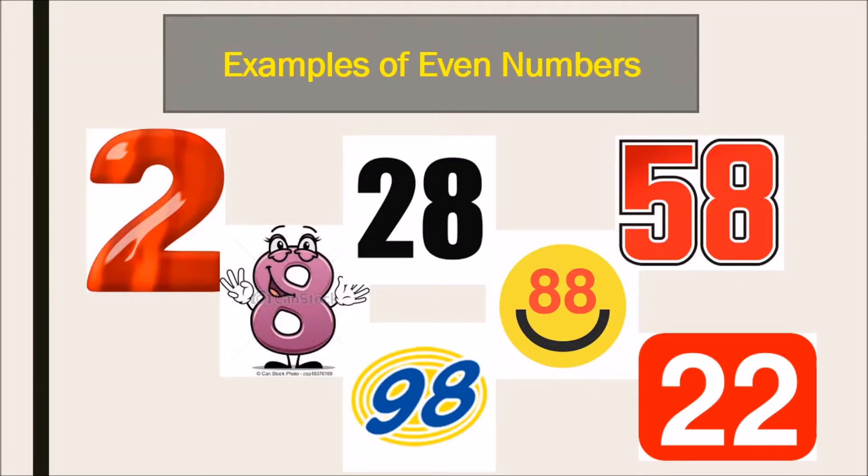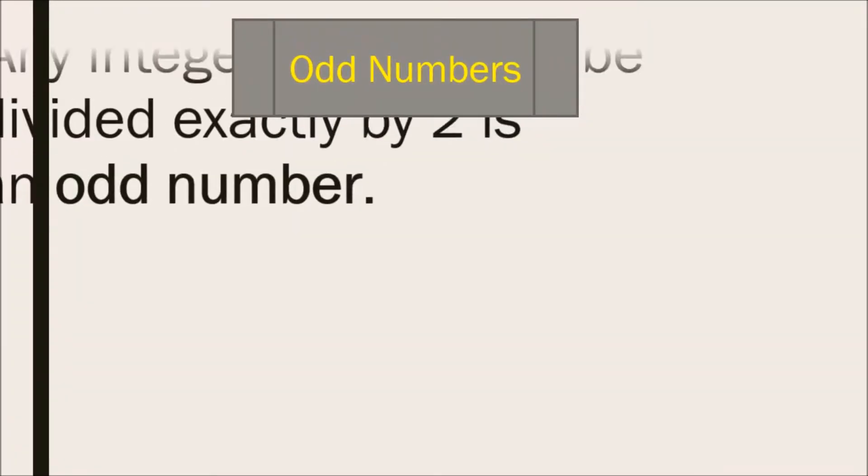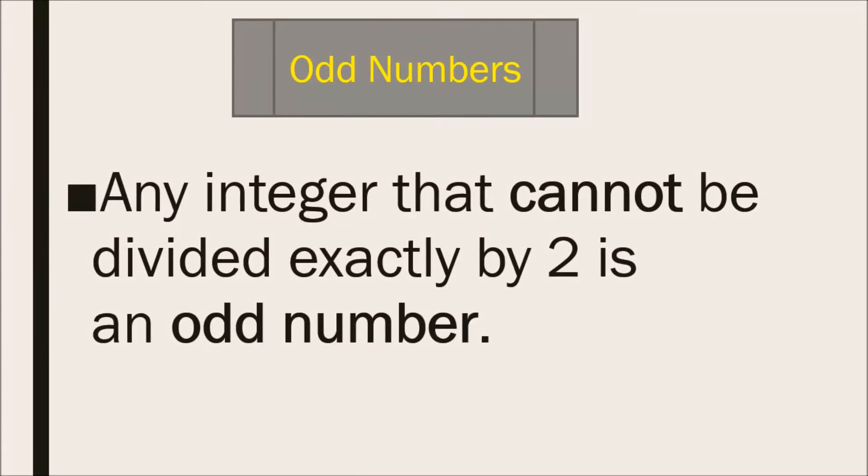Now, odd number. What is an odd number? Any integer that cannot be divided exactly by two is an odd number. Suppose we take the example: if we divide fifteen by two then there will be a remainder of one, so it is not divisible by two, so it is an odd number.